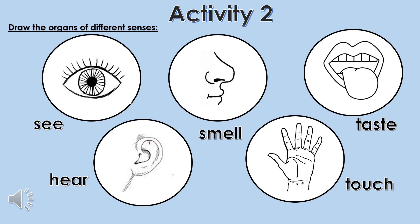In activity 2, you have to draw the organs of different senses. We see through our eye — you can draw an eye in this circle. We smell through our nose — you can draw a nose. You can taste through your tongue — you can draw a tongue. You can hear through your ear — you can draw an ear. You can touch through your hand — you can draw a hand.